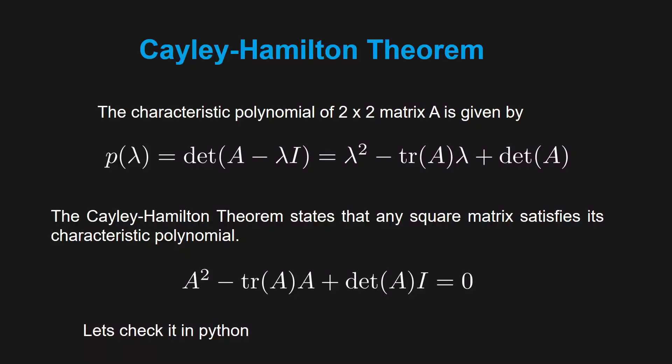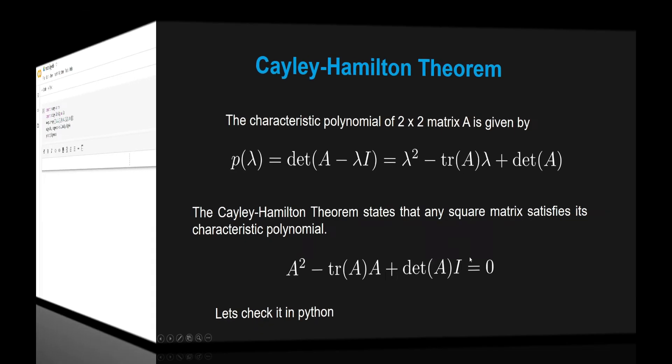Let's verify another important theorem called the Cayley-Hamilton theorem. For a 2x2 matrix, the characteristic polynomial is given by a specific expression. The Cayley-Hamilton theorem states that any square matrix satisfies its own characteristic polynomial. Let's check this theorem in Python.